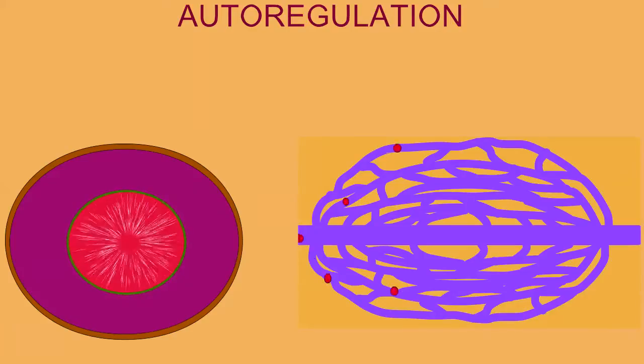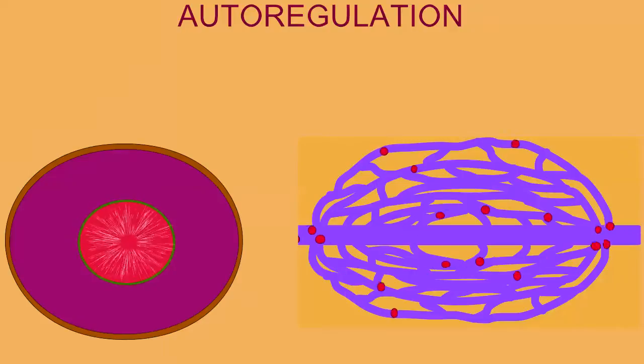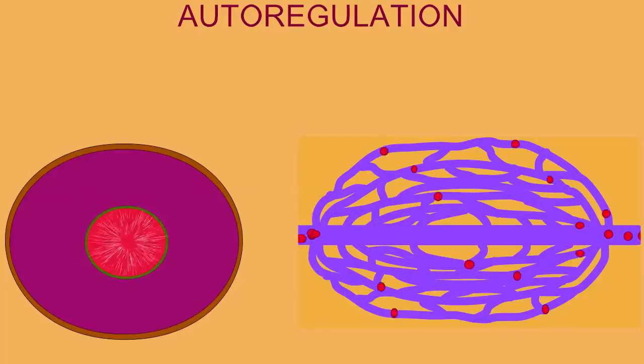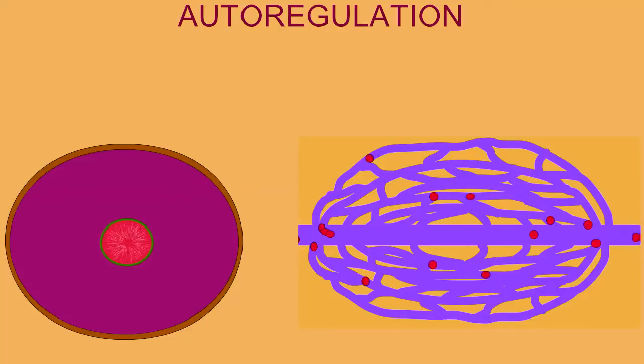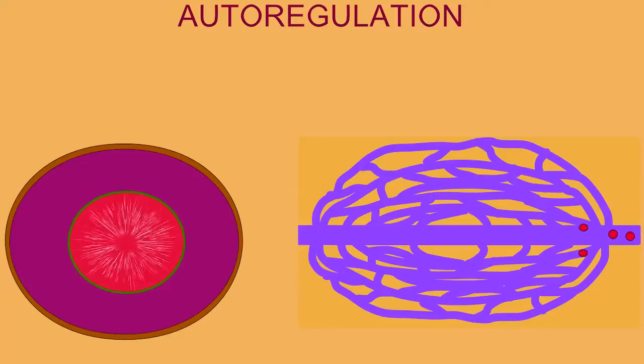Much of the regulation of the blood which arrives at a given tissue occurs with the vasoconstriction and vasodilation of the smooth muscle of small blood vessels in the tissue, especially the pre-capillary sphincters located in capillary beds. This is referred to as autoregulation because this control is not determined